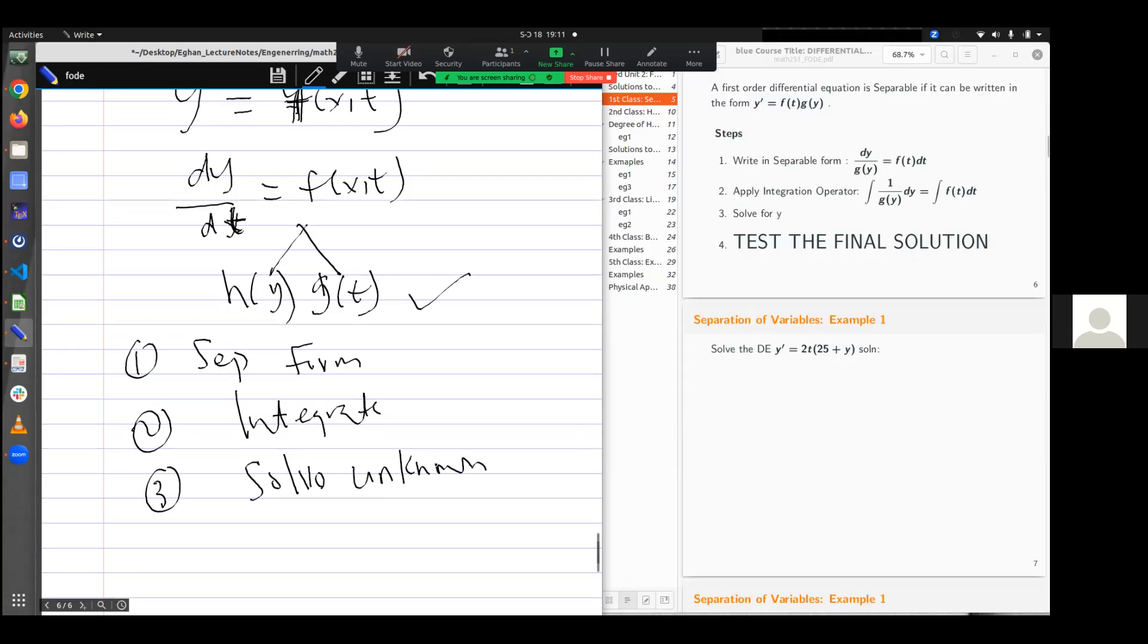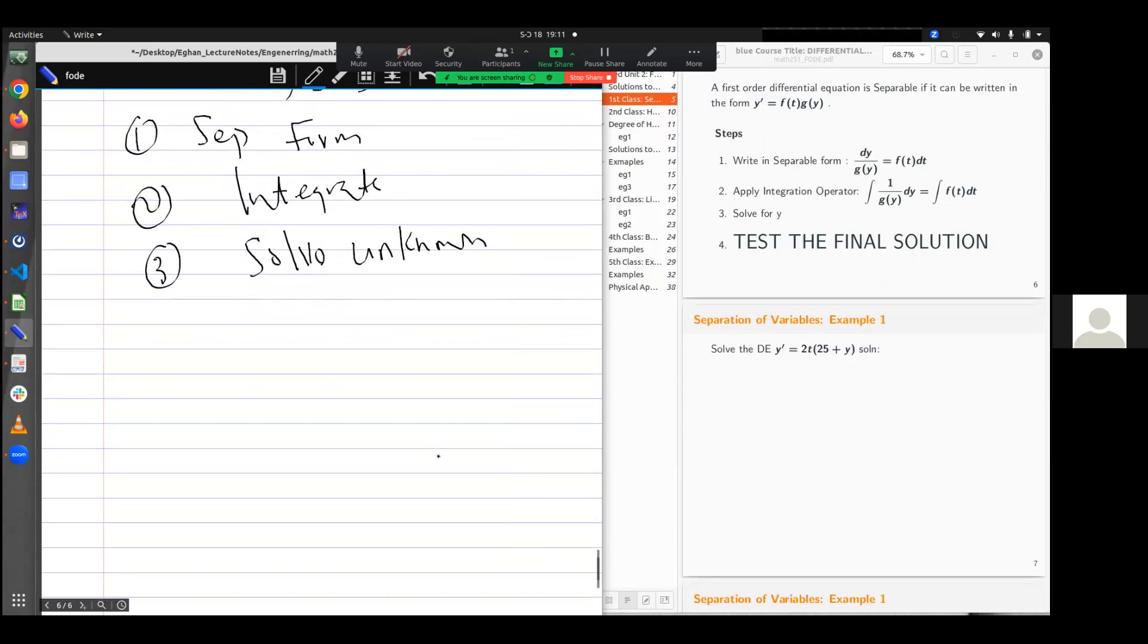So let's take example one. If I want to solve for the first-order differential equation given as y prime equal to 2t(25 + y). The question is, is this separable? How do I do that? I want to write it such that I'll have functions in terms of y only and then function in terms of t only.